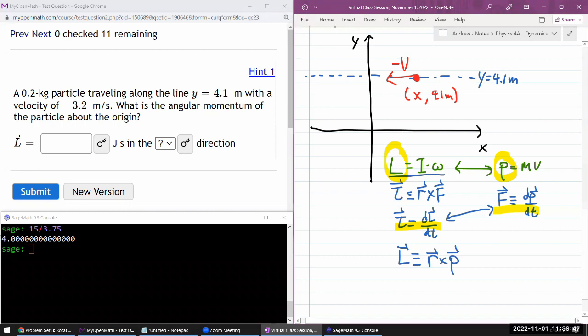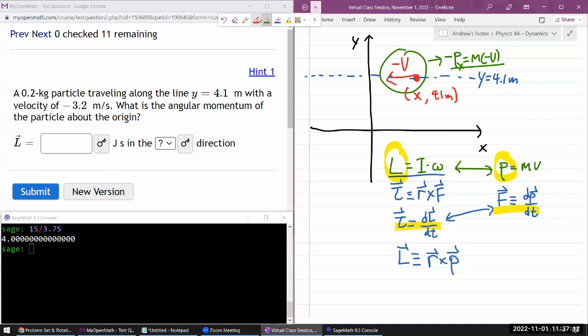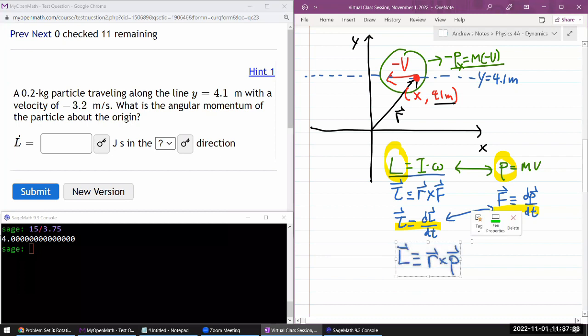Angular momentum is equal to or maybe even defined as, it's defined as the cross product of the displacement vector with a momentum vector. So you can get the momentum vector here easily enough from knowing the velocity and knowing the mass. We can say the momentum, or minus of the momentum, is equal to mass times the velocity of the particle. And this is all in the x direction. That's the only direction the particle is moving. And this displacement vector, it's a function of time. One thing you can say is that it has this constant value of 4.1 meter for y, and the x value will be changing over time.